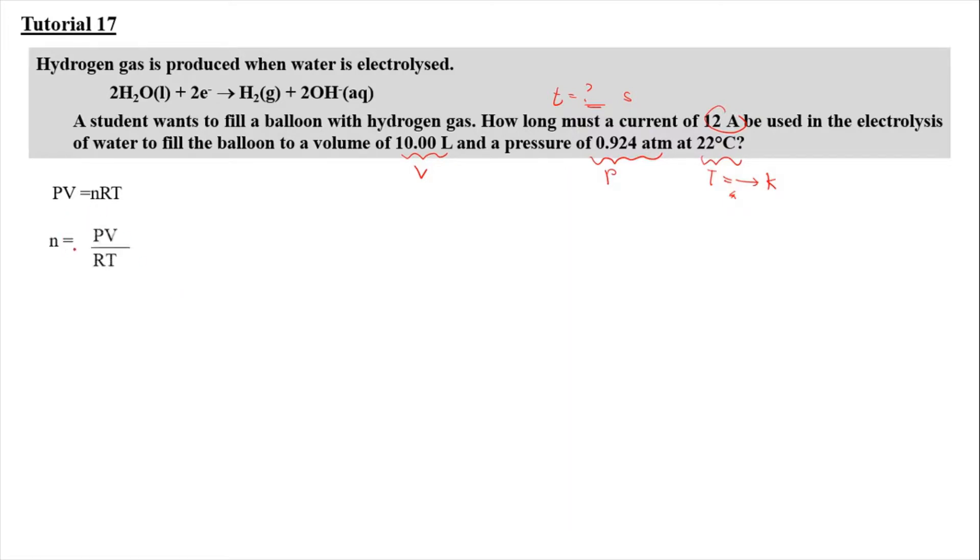Our pressure here is 0.94 and our volume is 10 liter. And our R constant, gas constant is 0.08206 liter atm per mol per Kelvin times 22 degrees Celsius. We need to convert it to Kelvin here. And lastly, our number of mol, we will get 0.3816 mol.